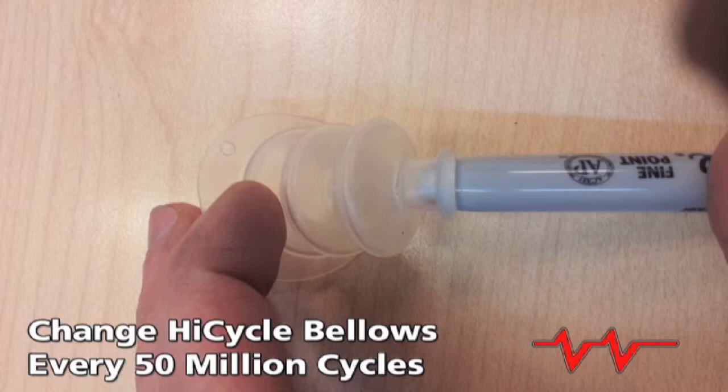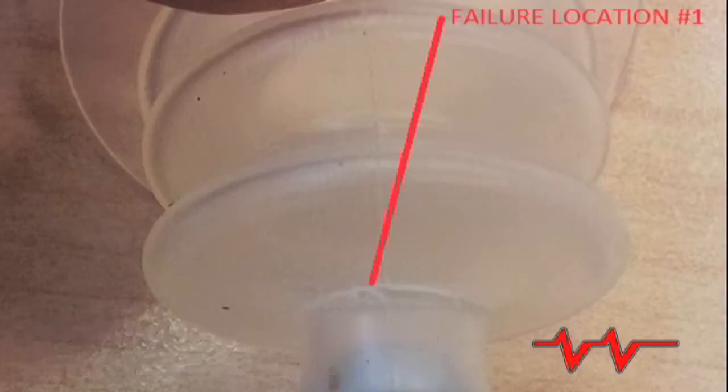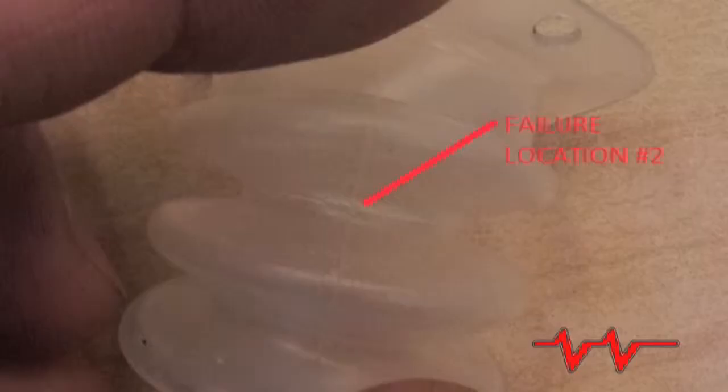When the bellows start to fail, they get tiny cracks and holes that may allow some fluid to leak out and let air get sucked into the chambers. Usually air bubbles due to bellow failure are very fine bubbles that make the fluid appear clouded.